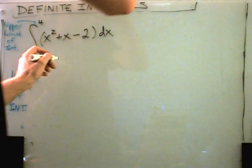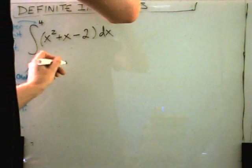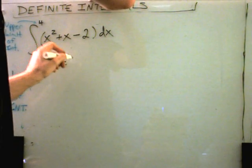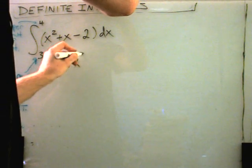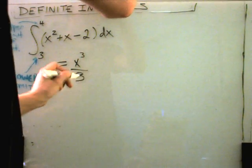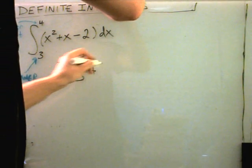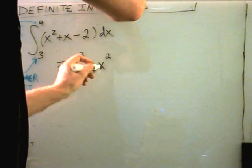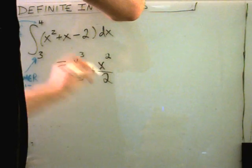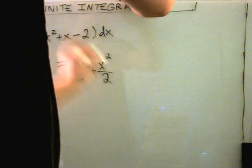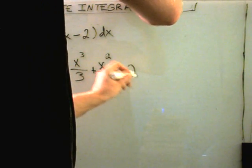But basically, you just find an antiderivative just like normal. So the antiderivative of x squared is x cubed divided by 3. The antiderivative of x to the first will get x squared over 2. The antiderivative of negative 2 will be negative 2x.